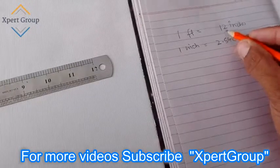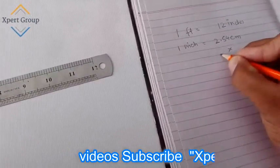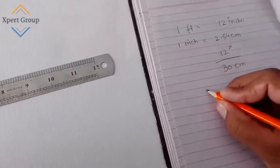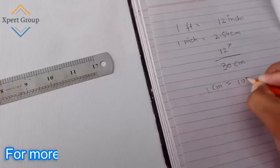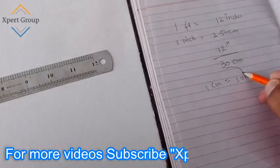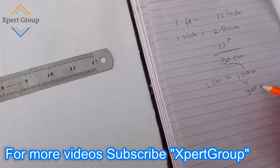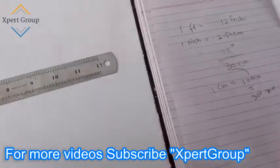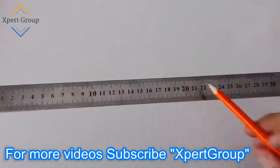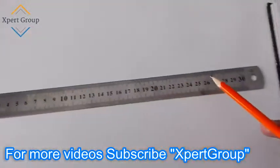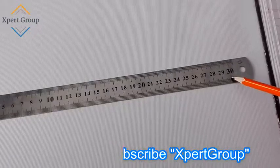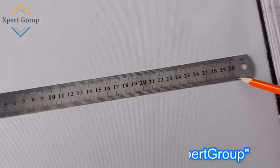So, 1 foot, 12 inches is equal to 2.54 times 12 is equal to approximately 30 cm. As you know, 1 cm is equal to 10 mm. So, 30 cm times 10 mm is equal to 300 mm. So, as you people are watching, 12 inches means 1 foot equal to 30 cm. A large line and a small line of 300 mm.